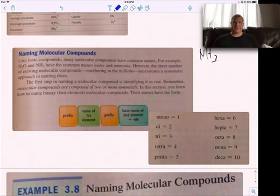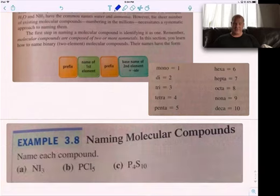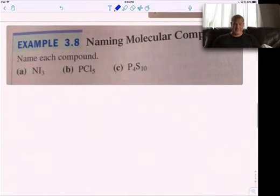And here's the prefixes. Mono is one, di is two, tri is three, tetra four, penta five, hexa six, hepta seven, octa eight, nona nine, deca ten. So like carbon dioxide, CO2, because it's one carbon in the first element, you drop the mono. CO, one carbon, one oxygen, is carbon monoxide. Even though you drop the mono for the first one, you do not drop it for the second.